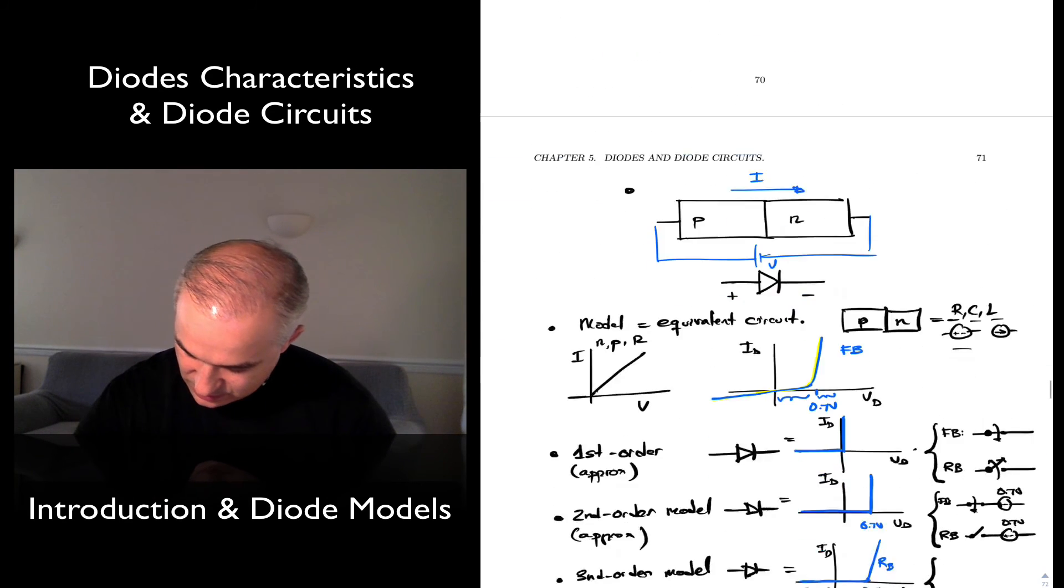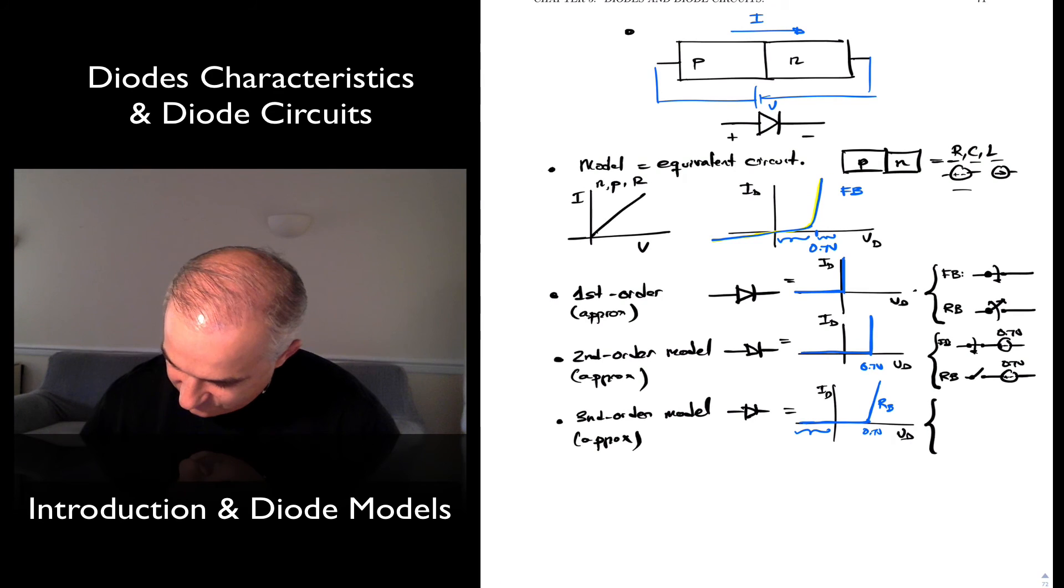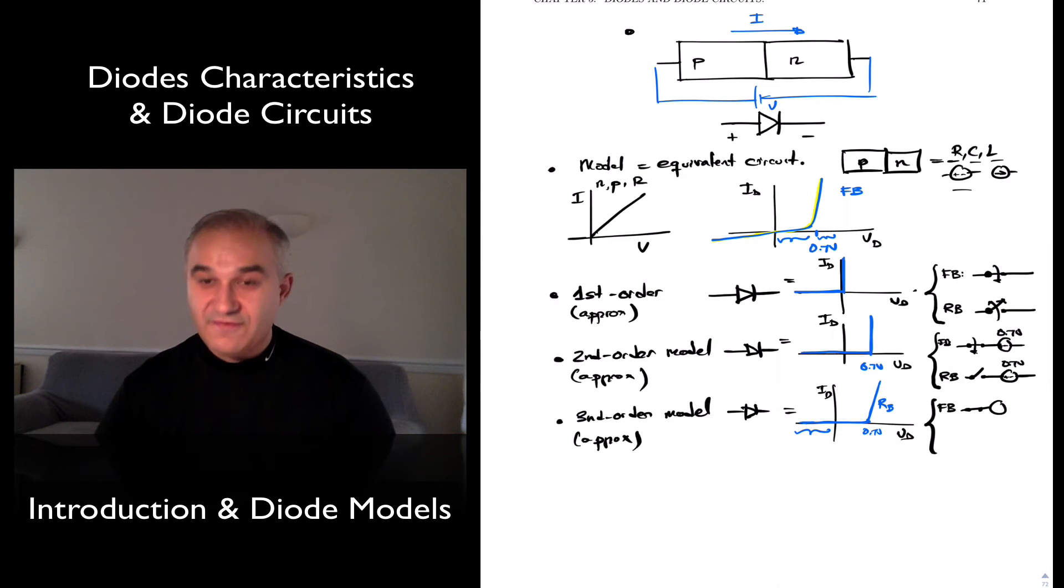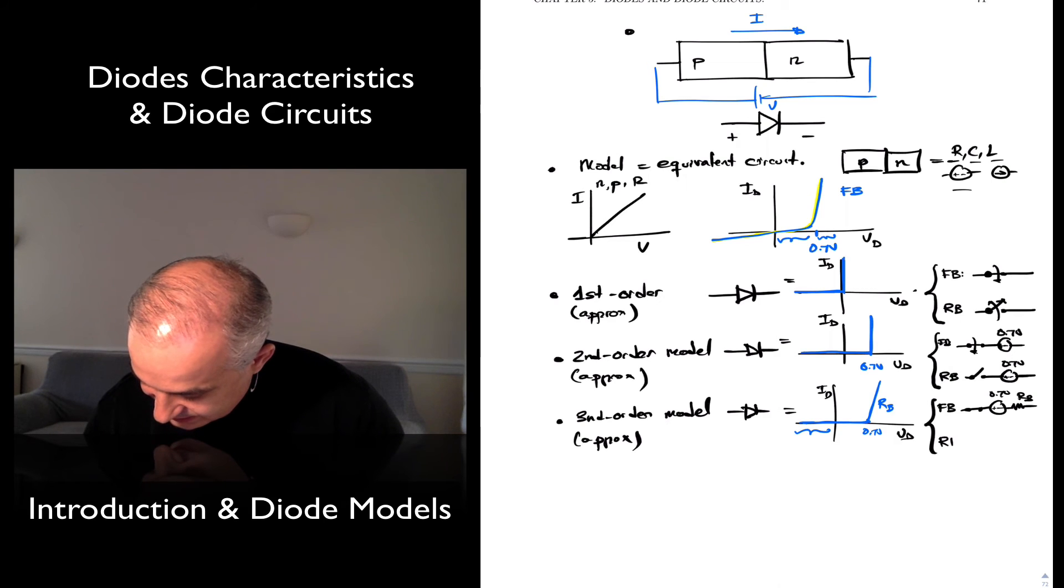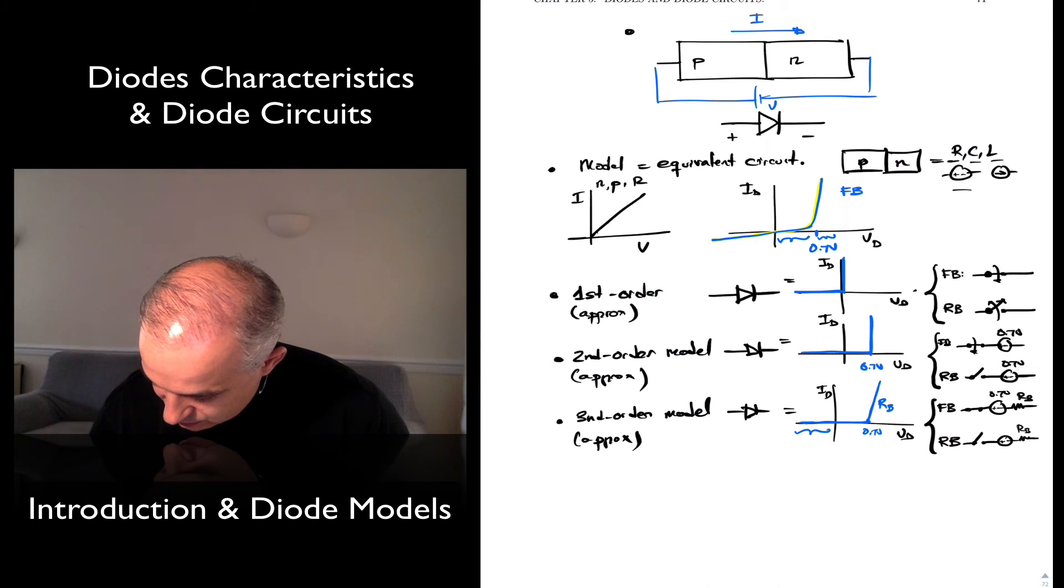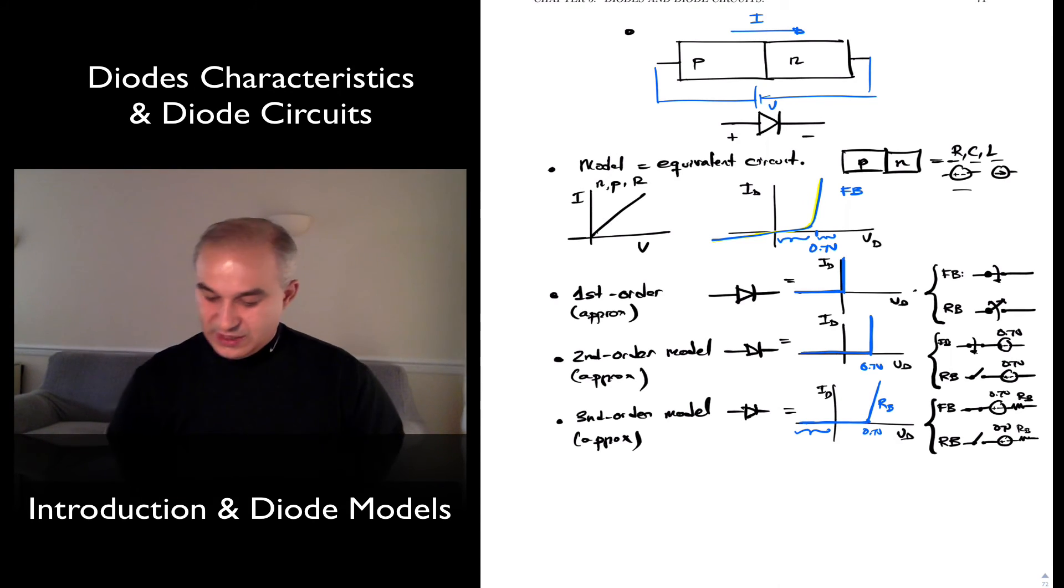In that case, what will be our model? For the forward bias, it is a closed switch, and then we are going to have a voltage source, 0.7 volts, and a resistor, bulk resistance. In the reverse bias, it's an open switch, same model.